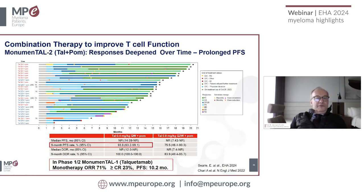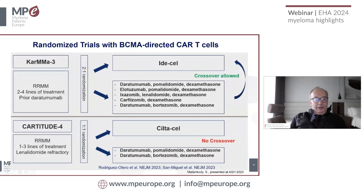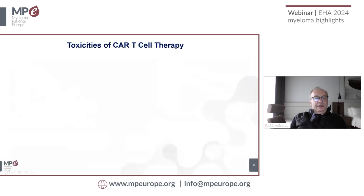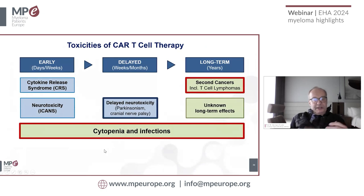We should extend the treatment-free interval and combine agents to make bispecific antibodies more effective. For CAR-T cells, we are moving them to earlier lines of therapy — giving them earlier allows better tumor load control, thereby reducing cytokine release syndrome, neurotoxicity, cytopenia, infections, and delayed neurotoxicity, which depends on tumor load prior to CAR-T therapy.